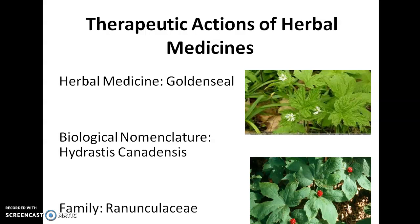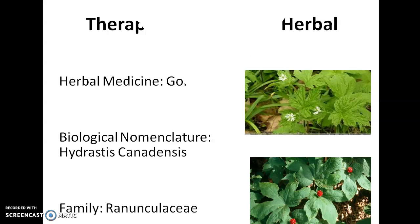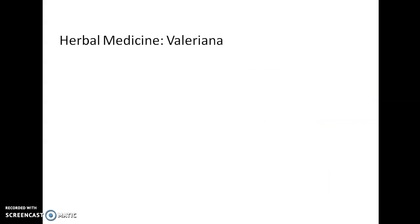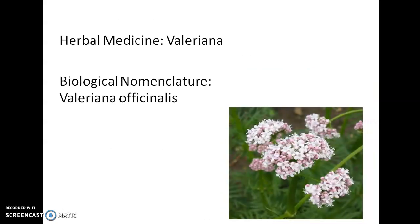Valerian: its biological nomenclature is Valeriana officinalis, its family is Valerianaceae. It is utilized to distill into ointments and oils, dried and employed in capsules or teas in household medicine.